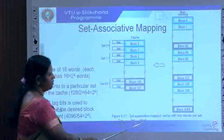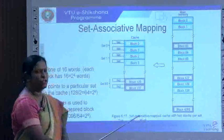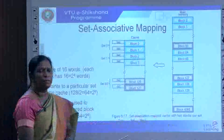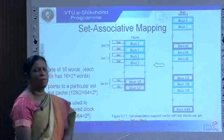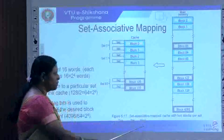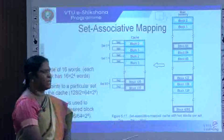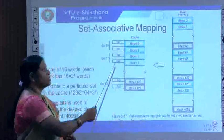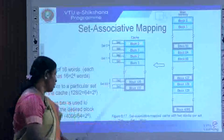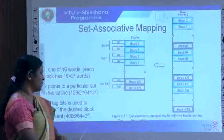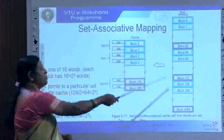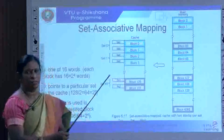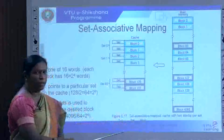The 6 tag bits are used to check if the desired main memory block is present in the cache. This is the set-associative mapping: the memory address consists of a 6-bit tag, 6-bit set field, and 4-bit word field. The set field points to the correct set in the cache, and the tag identifies which specific main memory block is resident there.